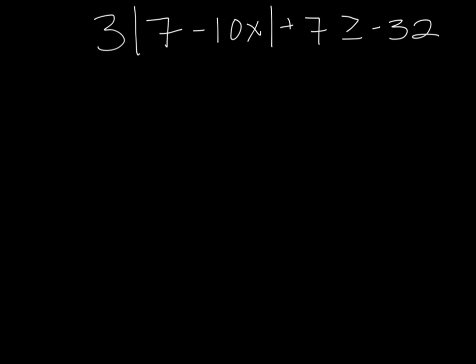In this example, we're going to look at absolute value inequalities that end up giving us all real numbers as the possible solutions. Here we have an absolute value inequality. We begin by trying to isolate the absolute value as we would always.